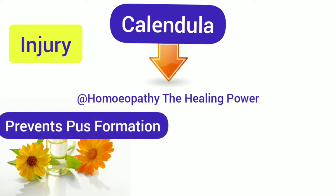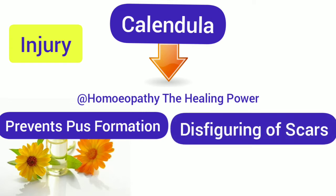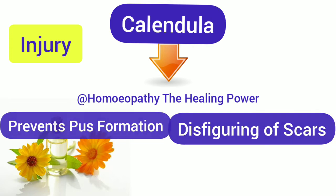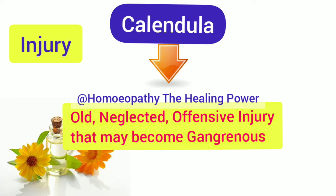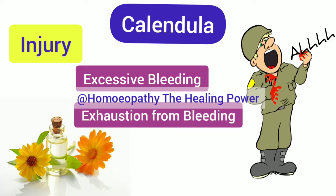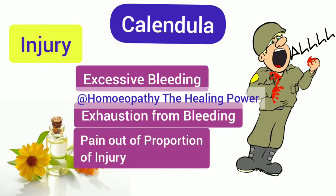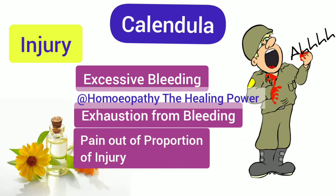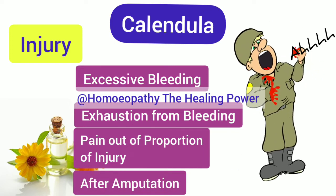Calendula not only heals the injured area but also prevents pus formation and prevents the disfiguring of scars. It is ideally suited to old, neglected, offensive injuries which may turn into gangrenous conditions. Calendula is also indicated where there is excessive bleeding from injury, where the patient is exhausted from blood loss, where there is excessive pain out of proportion to the injury, and also after amputation.